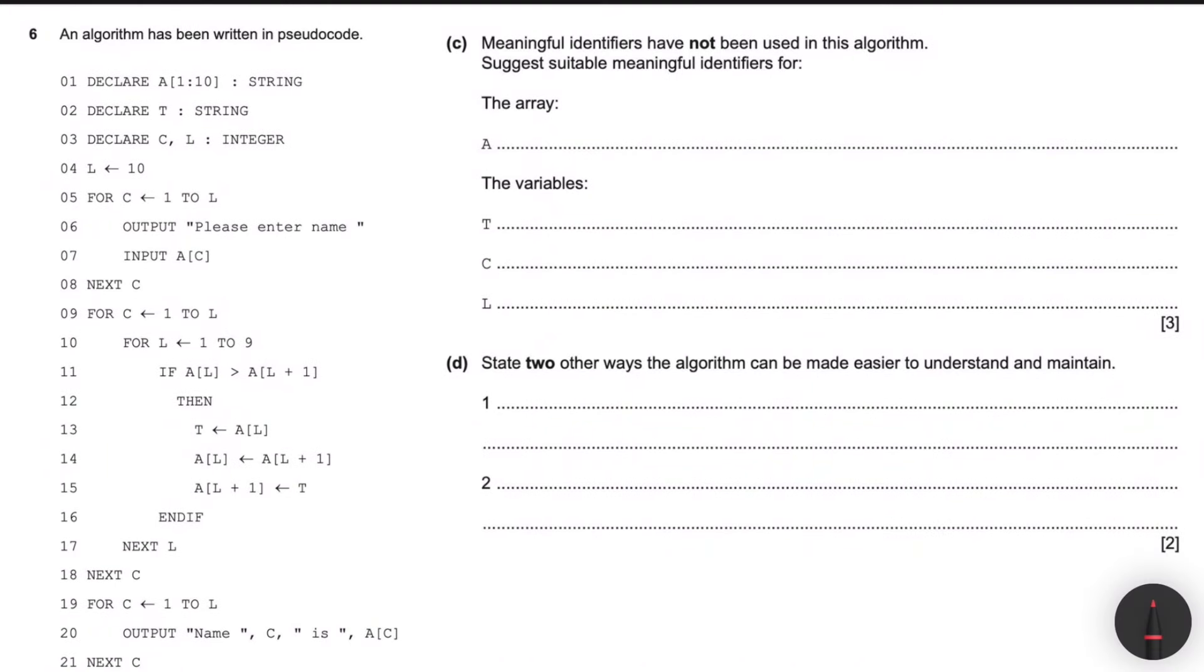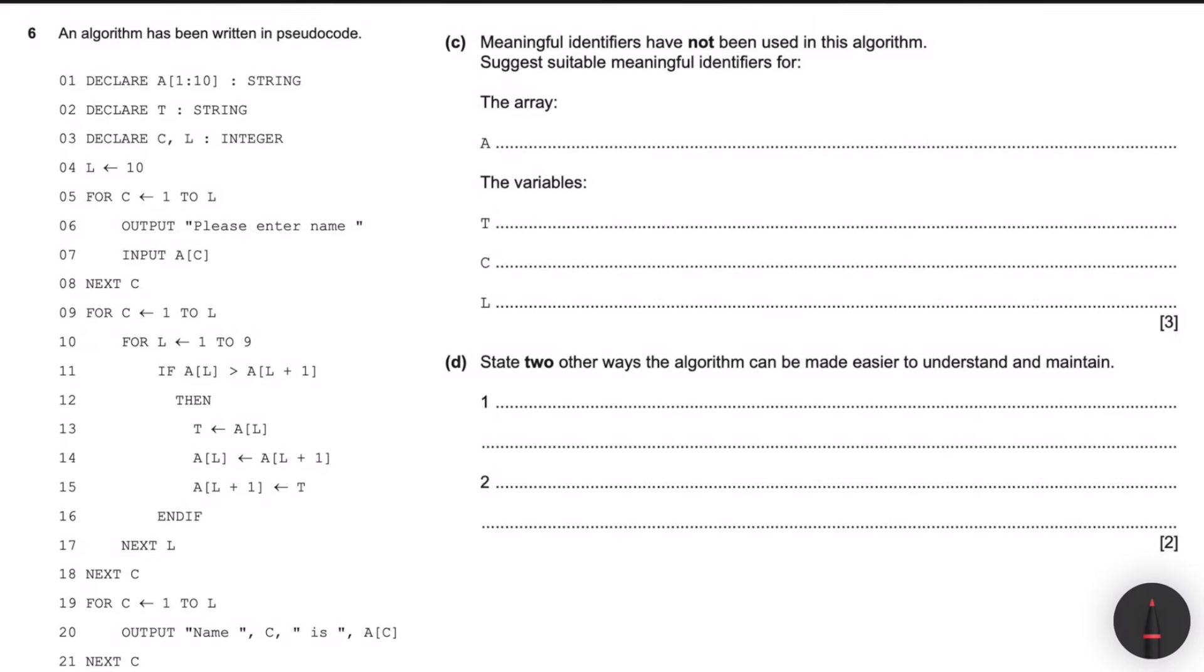Meaningful identifiers have not been used in the algorithm. Suggest suitable meaningful identifiers. A is the array, so I'm going to call this names array. T, I'm going to call this temp name, temporary names. C is normally counter, so we're going to use that as a counter. And L, the clue is in the question, is the length of the string. We've got ten characters, so I'm going to put L as the length of the array, the size of the array.